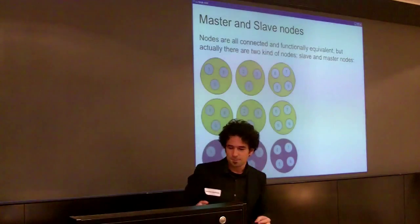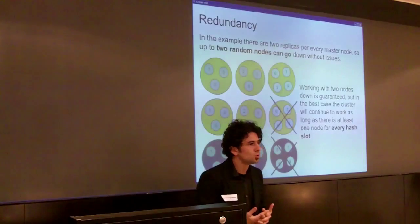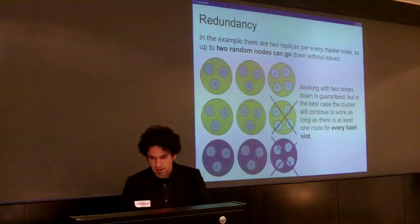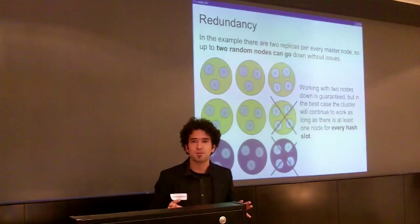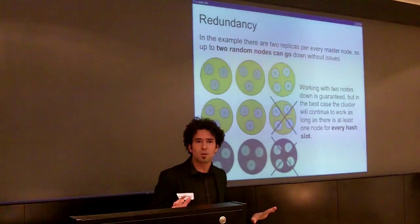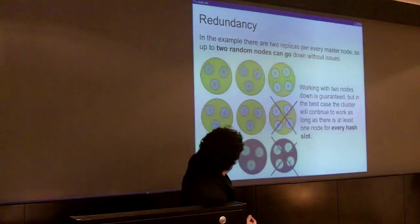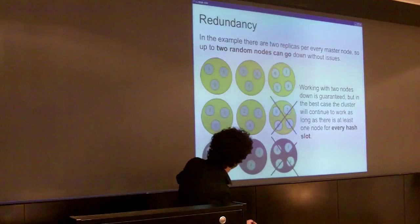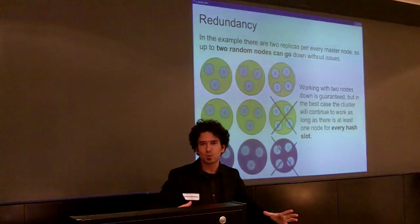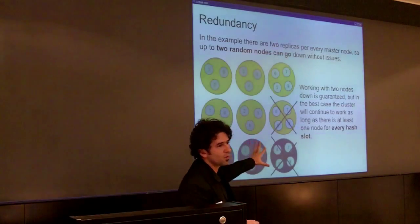Our ability to resist node failures is limited to the number of replicas we have. In this configuration, up to 2 nodes can go down and nothing wrong will happen. We can get luckier than this if all the failures are distributed such that at least one node for every hash slot survives, and the cluster stays up. But the strict guarantee here is that 2 nodes can go down without problems.